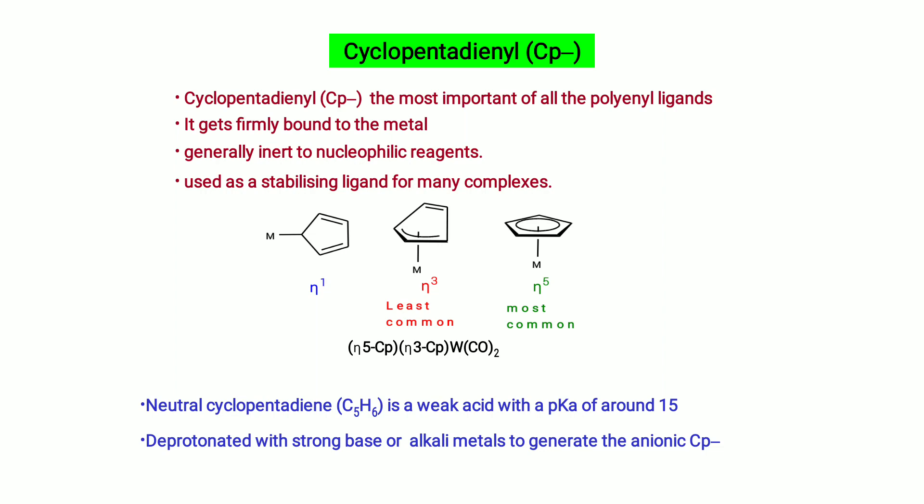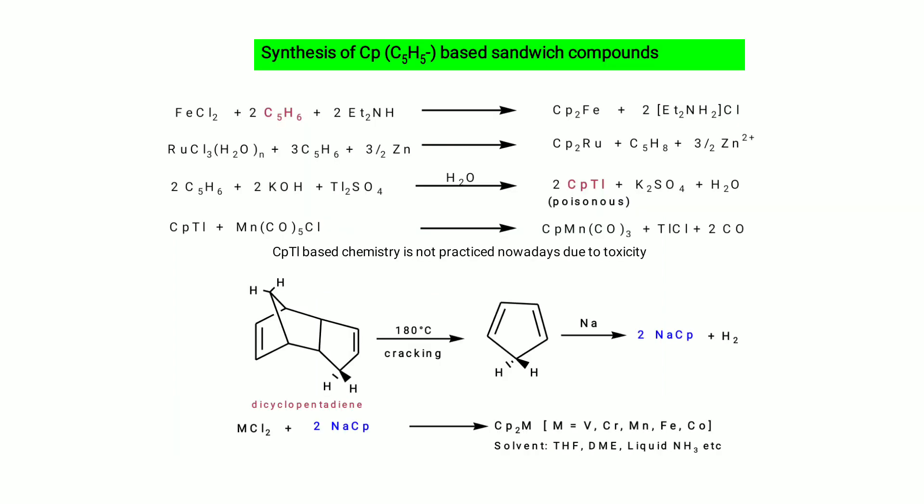Cyclopentadienyl is the most important polyenyl ligand, firmly bound to metals and generally inert to nucleophilic reagents, used as a stabilizing ligand. Neutral cyclopentadiene (C₅H₆) is a weak acid with pKₐ ~15 and can be deprotonated with a strong base or alkyl metal to generate anionic Cp. Synthesis of Cp-based sandwich compounds: react iron chloride with C₅H₆ and diethylamine to give Cp₂Fe. Note that TlCp-based chemistry is avoided nowadays due to toxicity.